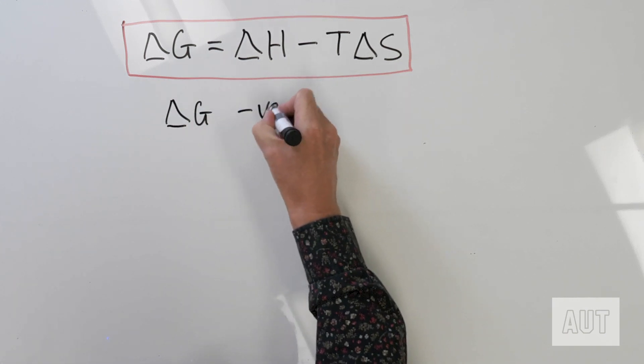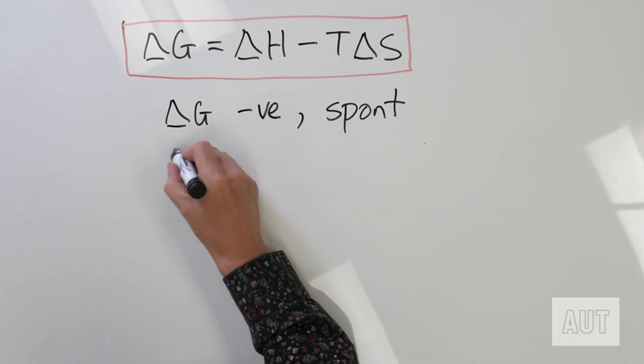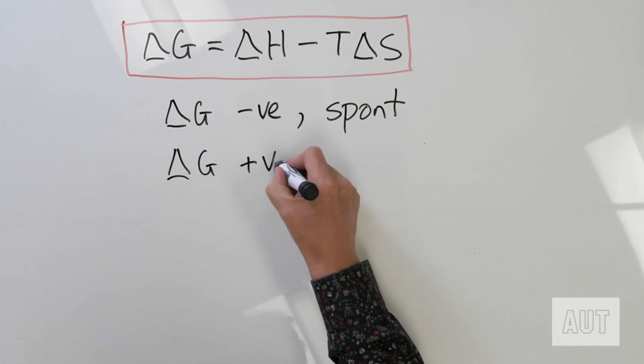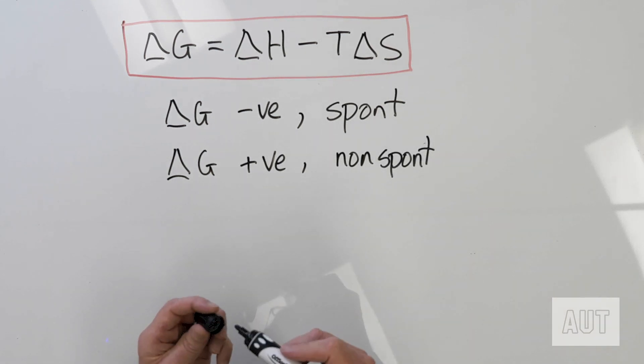The sign of the value of Gibbs energy tells you all about spontaneity. If ΔG is negative, then your reaction or process is spontaneous. If ΔG is positive, then your process or reaction is not spontaneous — simple as that. All we need is to calculate our values of ΔG, find out whether it's positive or negative, and that tells us whether our process is spontaneous or not.